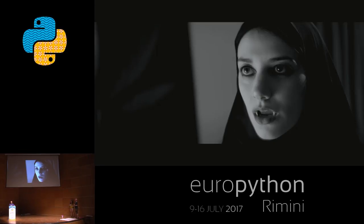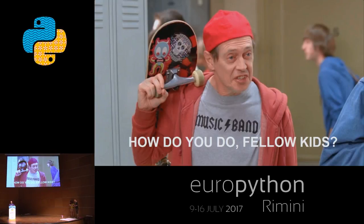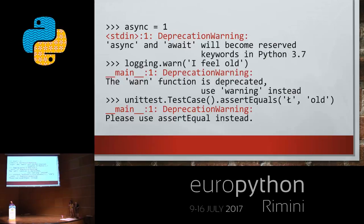Remember that time when you were bitten by an unexpected byte? That would totally not happen if you were using warnings with Python. When Instagram switched to Python 3, some code seemed to ignore configuration changes. It turned out UWSGI returns configuration parameters as bytes, so the check was always false due to mismatched types — that was the most expensive piece of Python code. Some of your favorite syntax, idioms, and APIs are deprecated and will be removed in future versions — you would be informed if you were running with warnings.